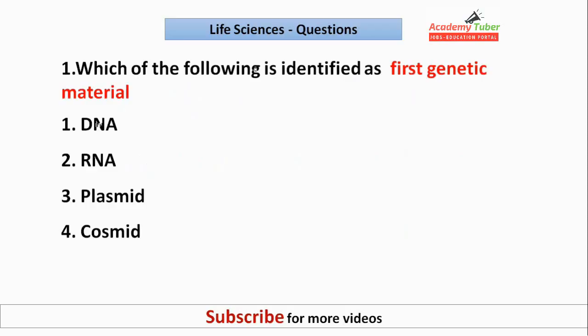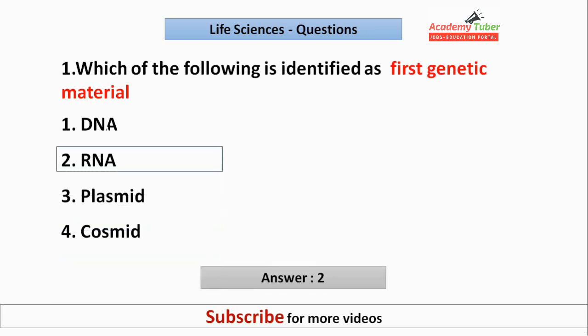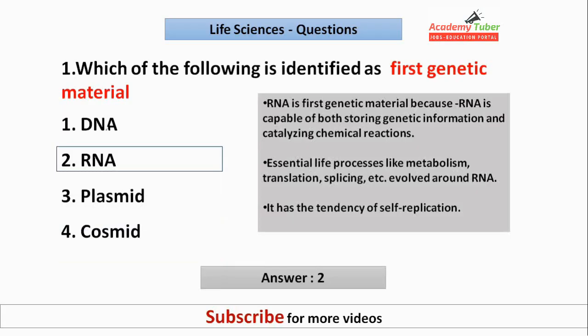Which of the following is identified as the first genetic material? The answer is RNA. RNA is the first genetic material because RNA is capable of both storing genetic information and catalyzing chemical reactions essential to life processes like metabolism, translation, splicing, etc., and it has the tendency of self-replication.